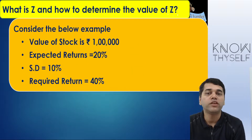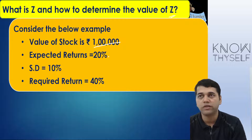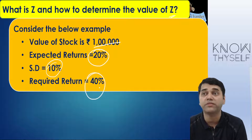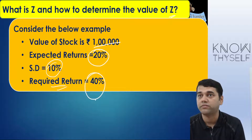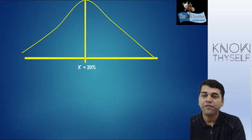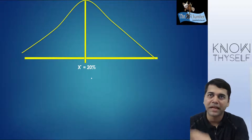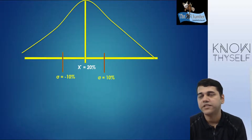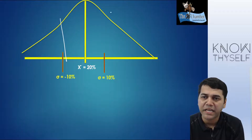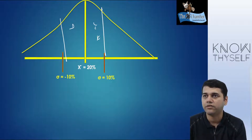Now, what is Z and how to determine the value of Z? You have invested 21 lakh rupees in one stock. The expected return is 20%, standard deviation is 10%, and you are expecting 40% return from that stock. Now, automatically, the moment you want 40% return, risk is also going to increase. If I plot X-bar as average return 20%, your standard deviation is 10%, meaning the return you will get might be plus or minus 10%, and we find that maximum 90% of returns will fall within this range only.